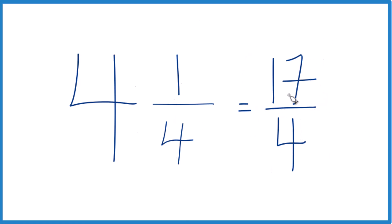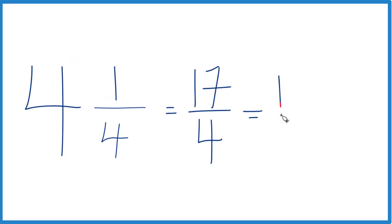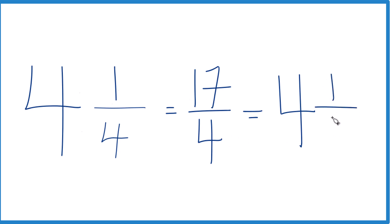And we can even check our work here, because 4 goes into 17, let's see, 4 times, because 4 times 4 is 16, and then we'd have 1 left over. Bring the 4 across, and that's what we started with, 4 and 1/4.